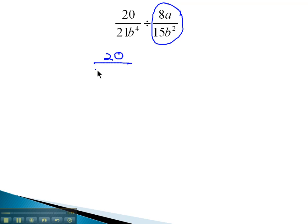So we have 20 over 21b to the 4th. Let's write that exponent as a product, 4 b's multiplied together, times, take the reciprocal, 15b squared, or bb, over 8a.